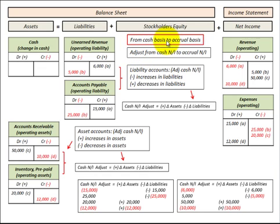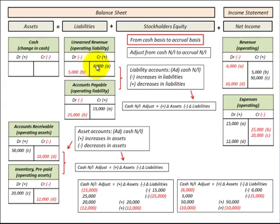In summary, for converting from a cash basis to an accrual basis, we adjusted cash net income to accrual net income using a T-account approach. Where we had a particular asset or liability on the balance sheet, we matched it with a revenue or expense account on the income statement. For example, the unearned revenue increase of six thousand was credited, requiring a matching debit to revenue, reducing cash net income.